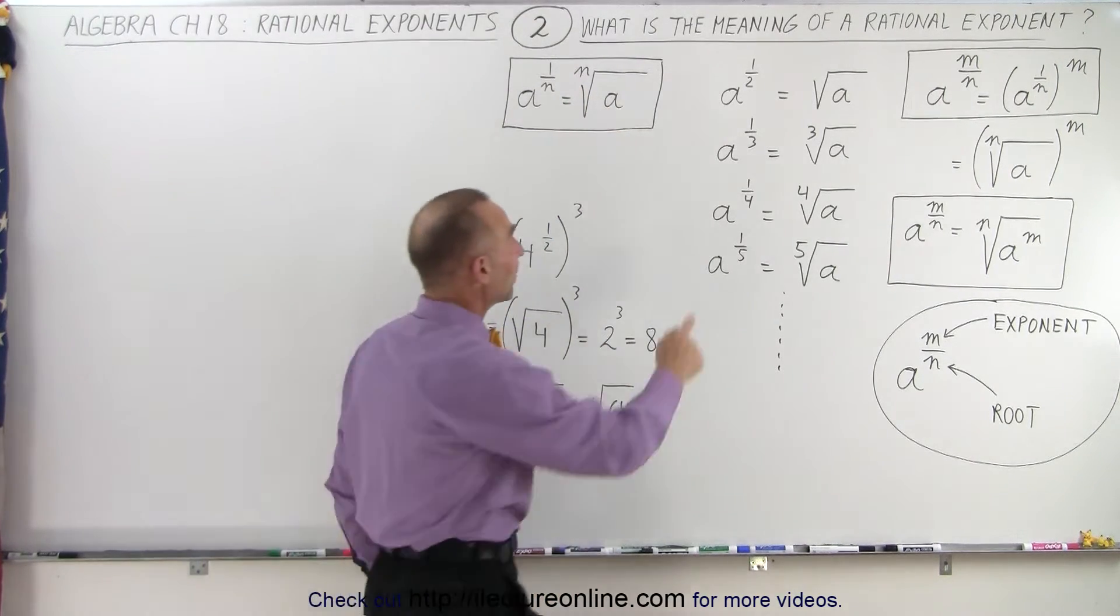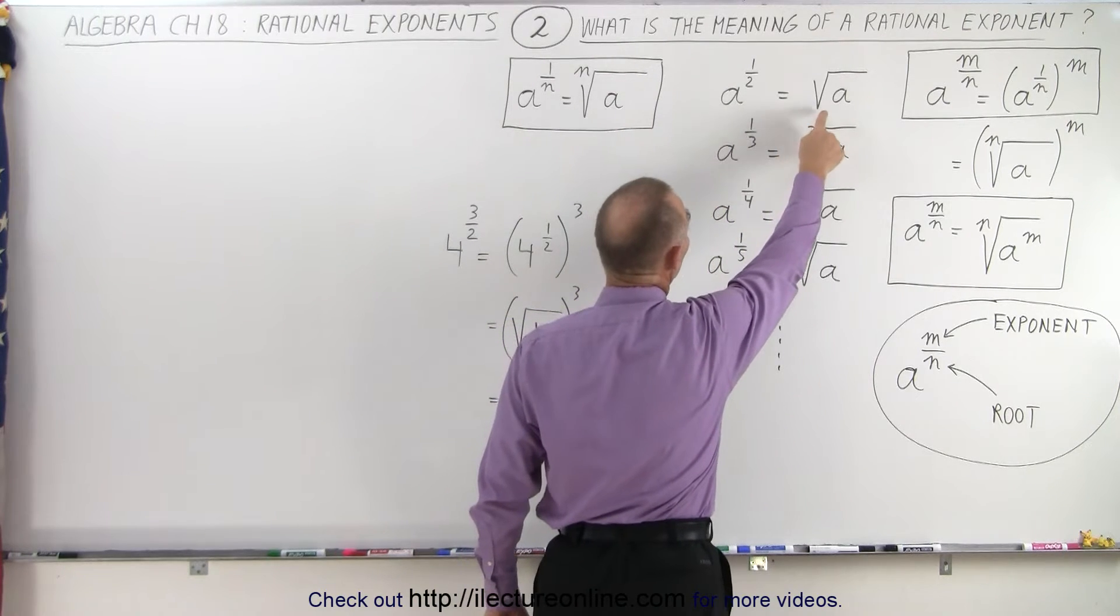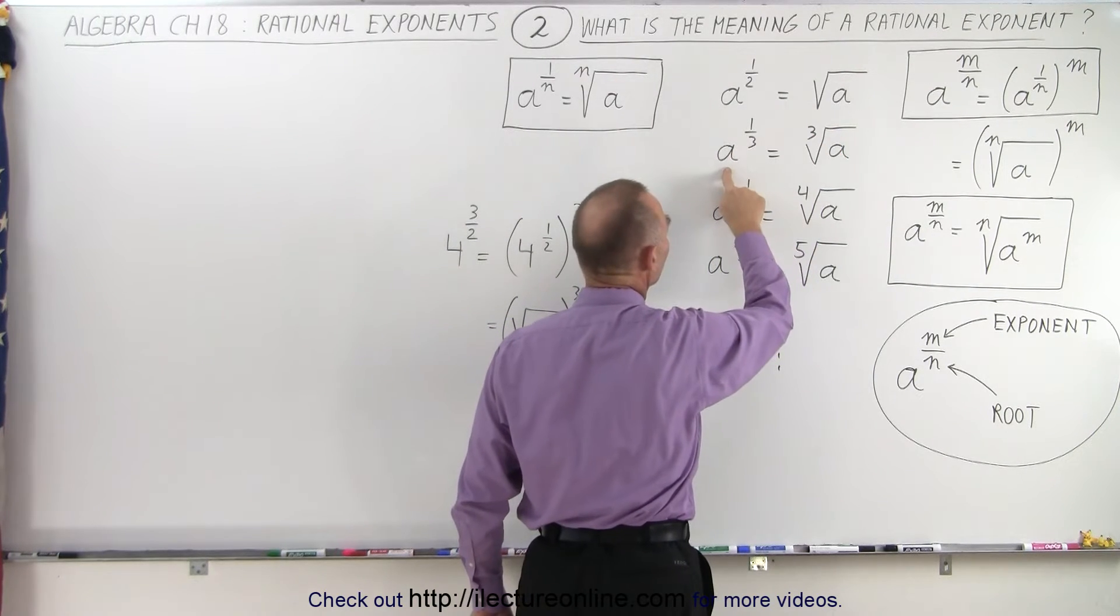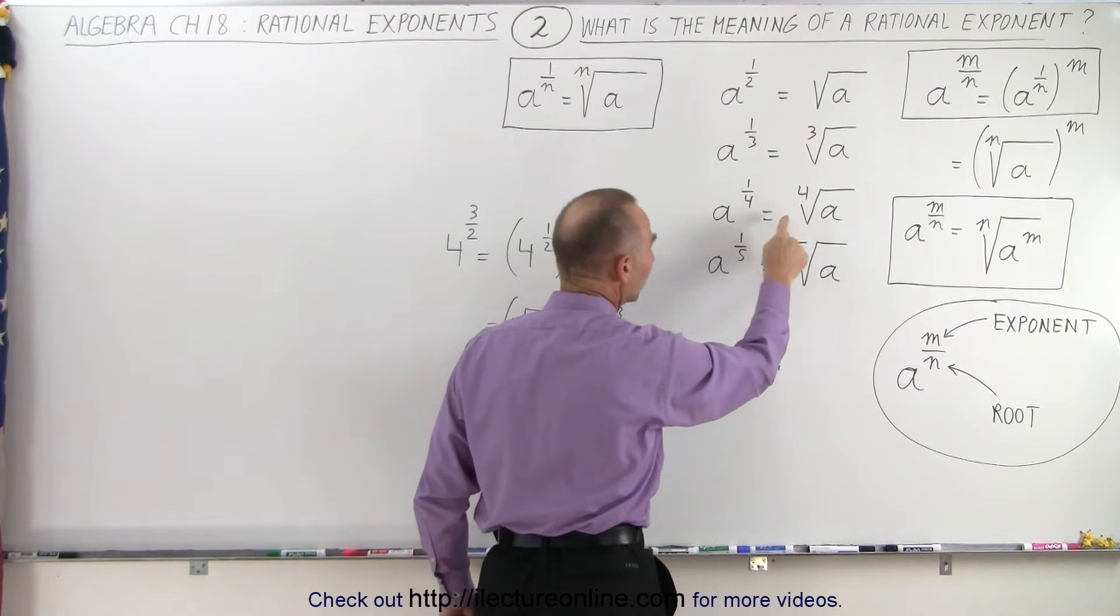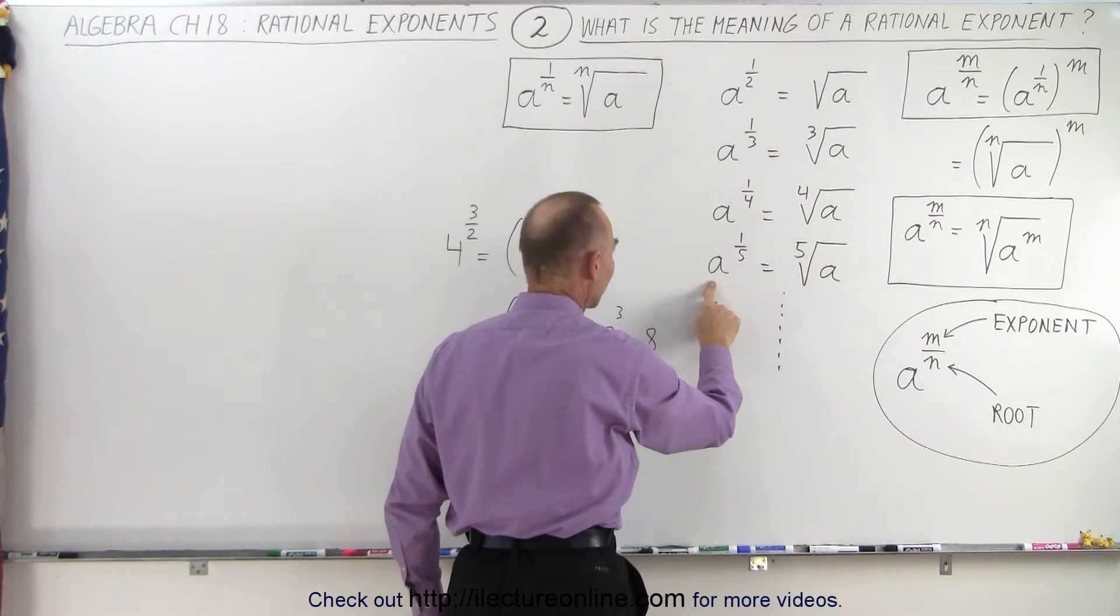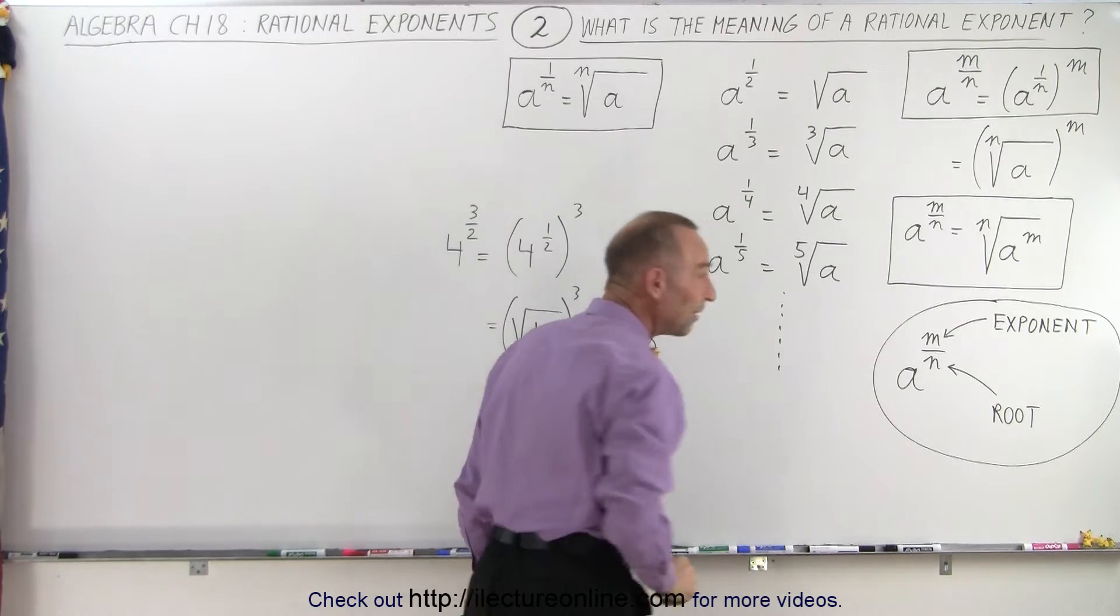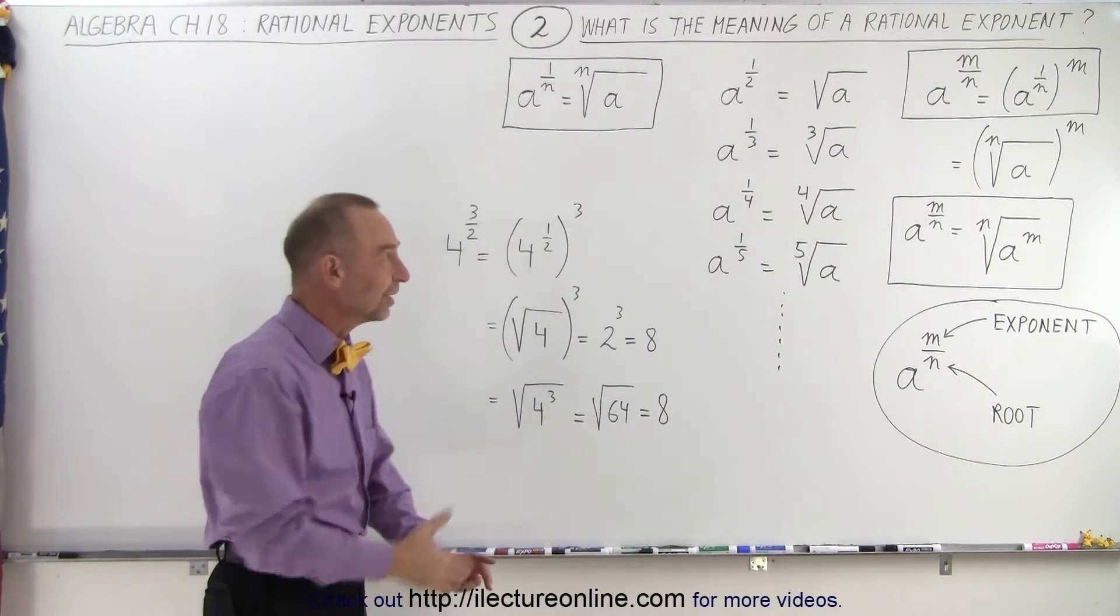So for example, if we have a to the 1 half, that's the same as the square root of a. a to the 1 third is the cube root of a. a to the 1 fourth is the fourth root of a. a to the 1 fifth is the fifth root of a, and so forth. Now I'm sure you can see the pattern there.